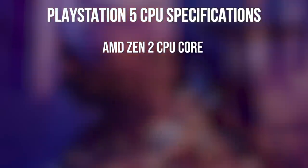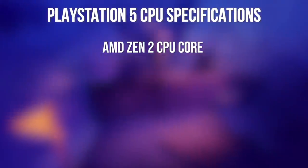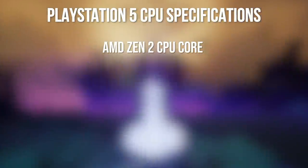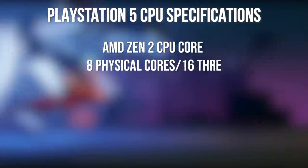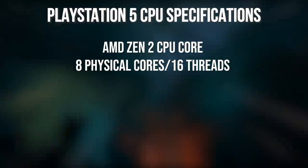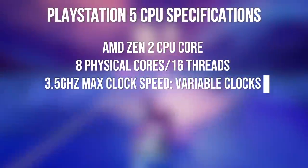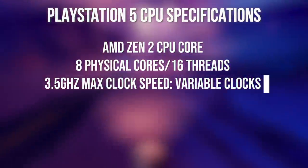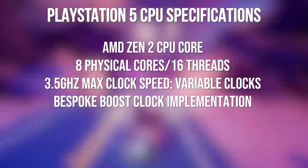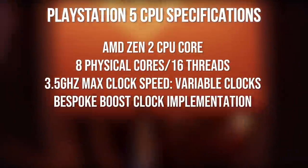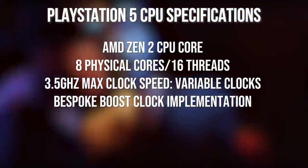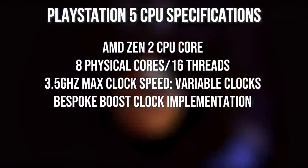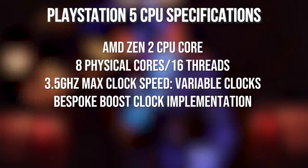Let's talk CPU and GPU clocks first. CPU-wise, it's been officially confirmed we're using AMD's Zen 2 architecture — 8 cores and 16 threads. We've got a clock speed of 3.5 GHz capped. Based on the briefing it does seem they're going for a dynamic approach using boost clocks, with a rather interesting method for determining the CPU and GPU speed relationship. It's a bold move to aim for such a high clock speed, and I'm curious to see what the thermals look like.